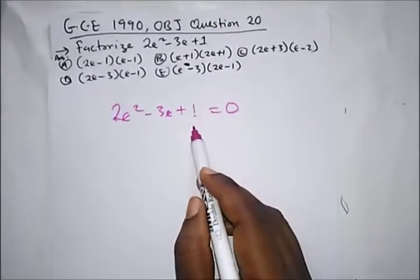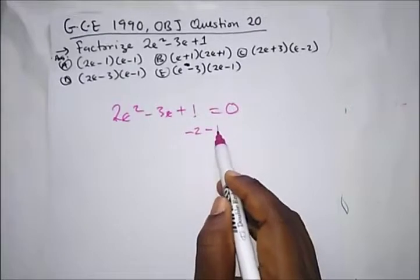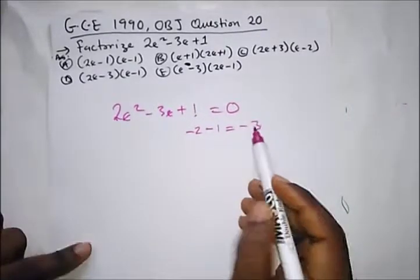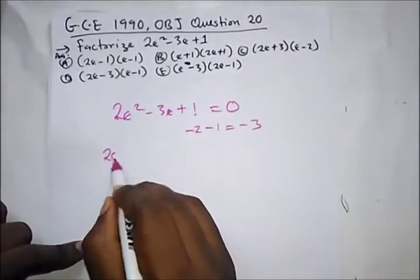And if we do minus 2 minus 1, it will give us a minus 3. So all we need to do is say 2e square.